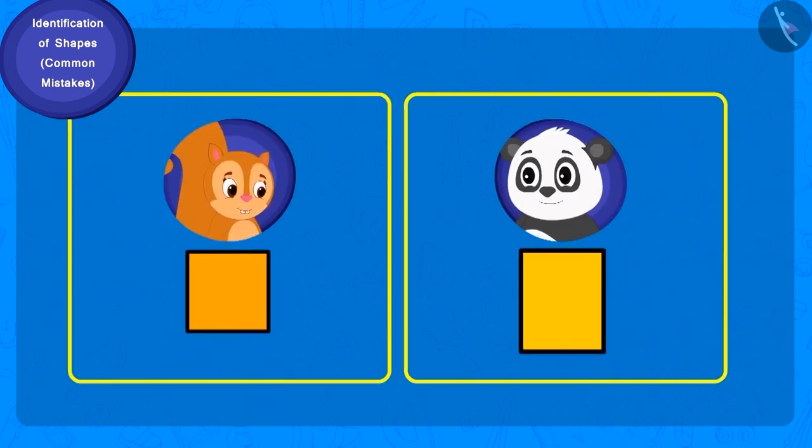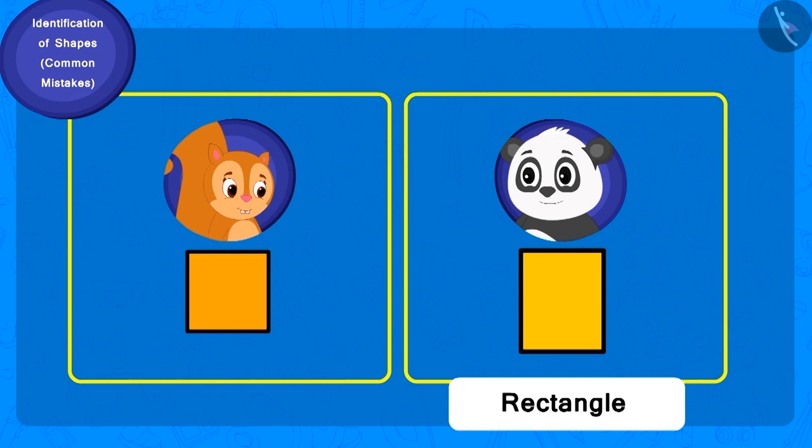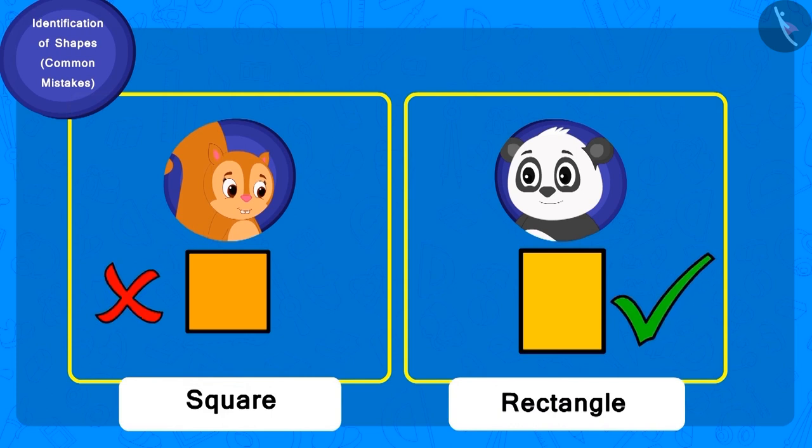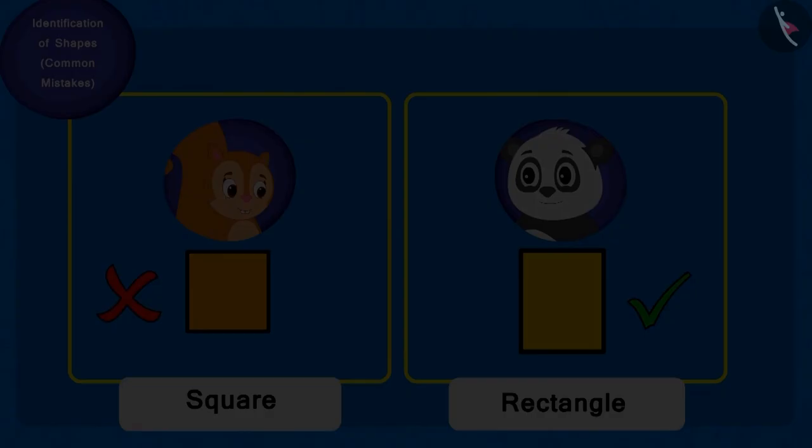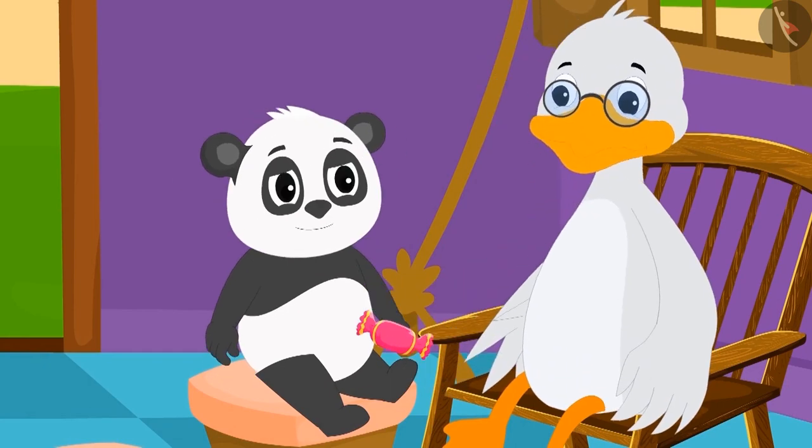So, Golu's answer, a rectangle, was absolutely right. And Chanda's answer, square, was incorrect. Chacha gave Golu the toffee.